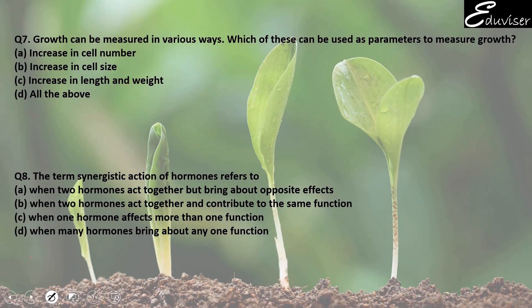Growth can be measured in various ways. Among the parameters — increase in cell number: yes, by seeing cell number increase you can say growth is occurring. Cell size can also indicate growth. Length and weight are also there. So D is correct — all the listed parameters are true for growth in a living organism.